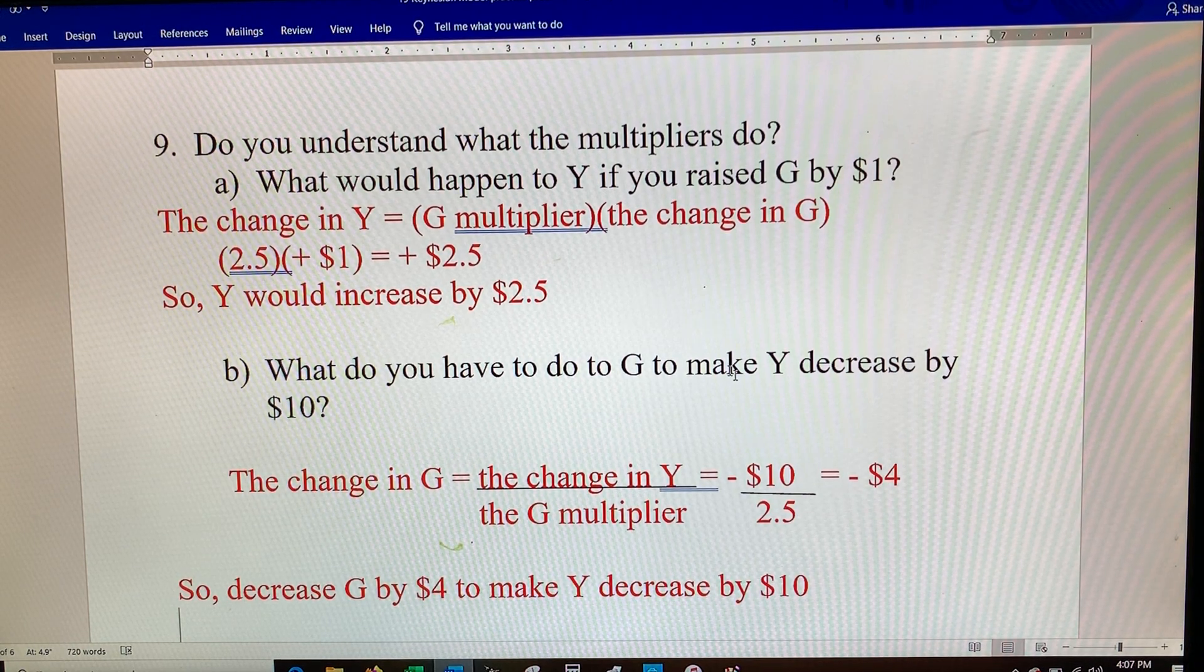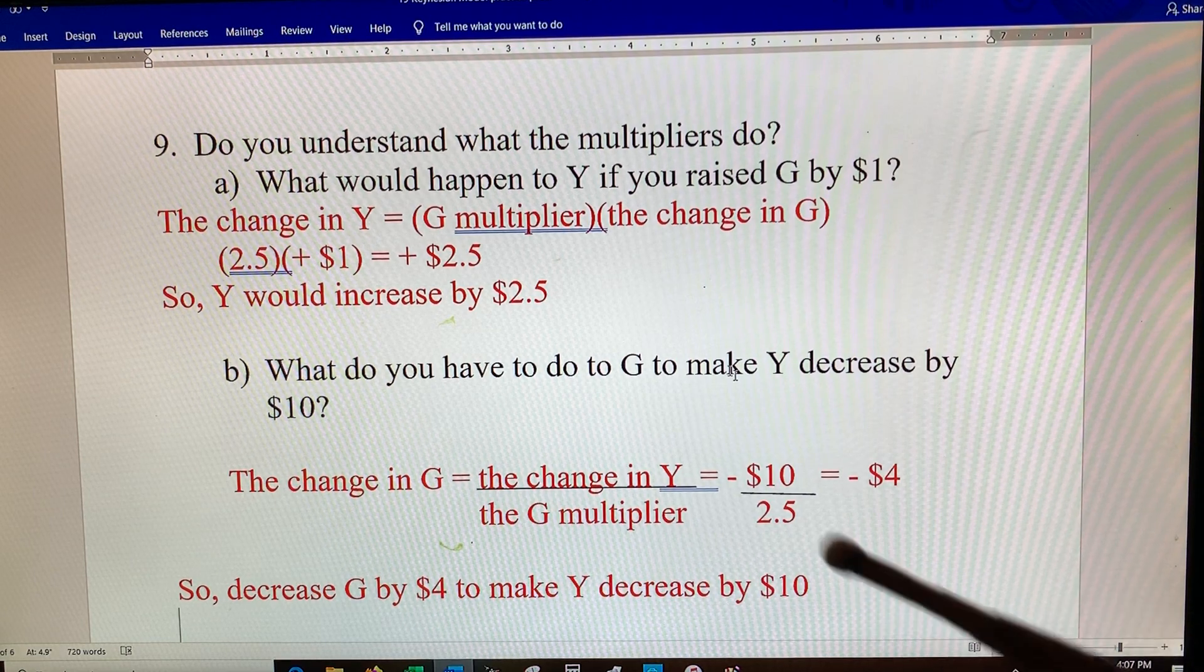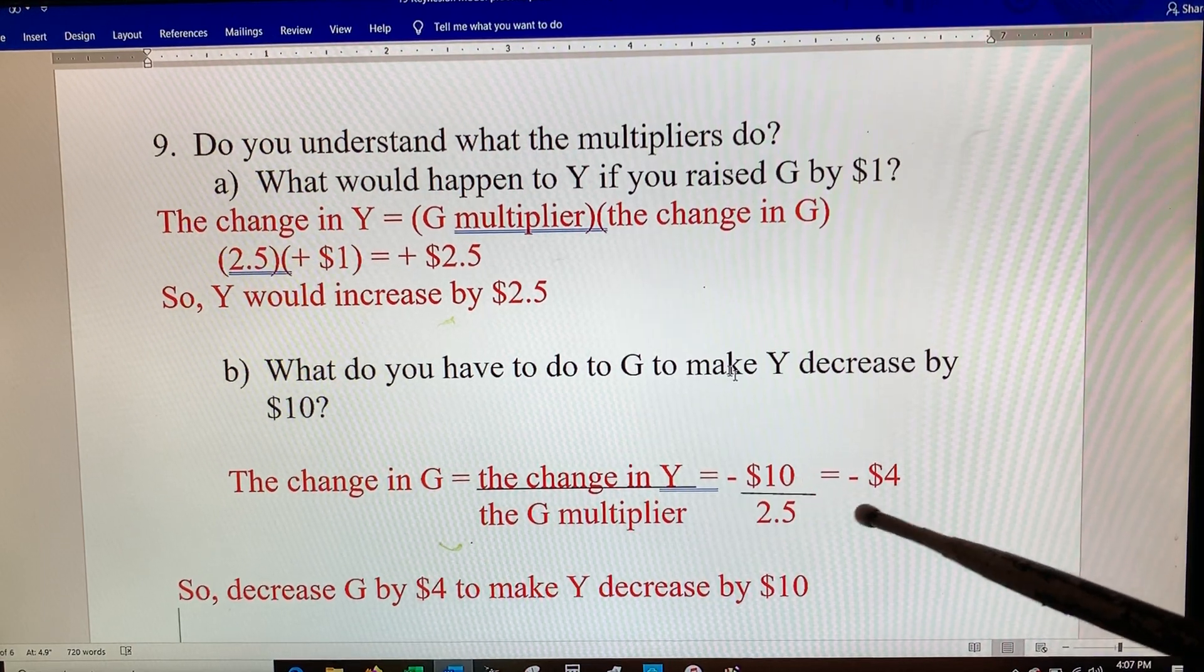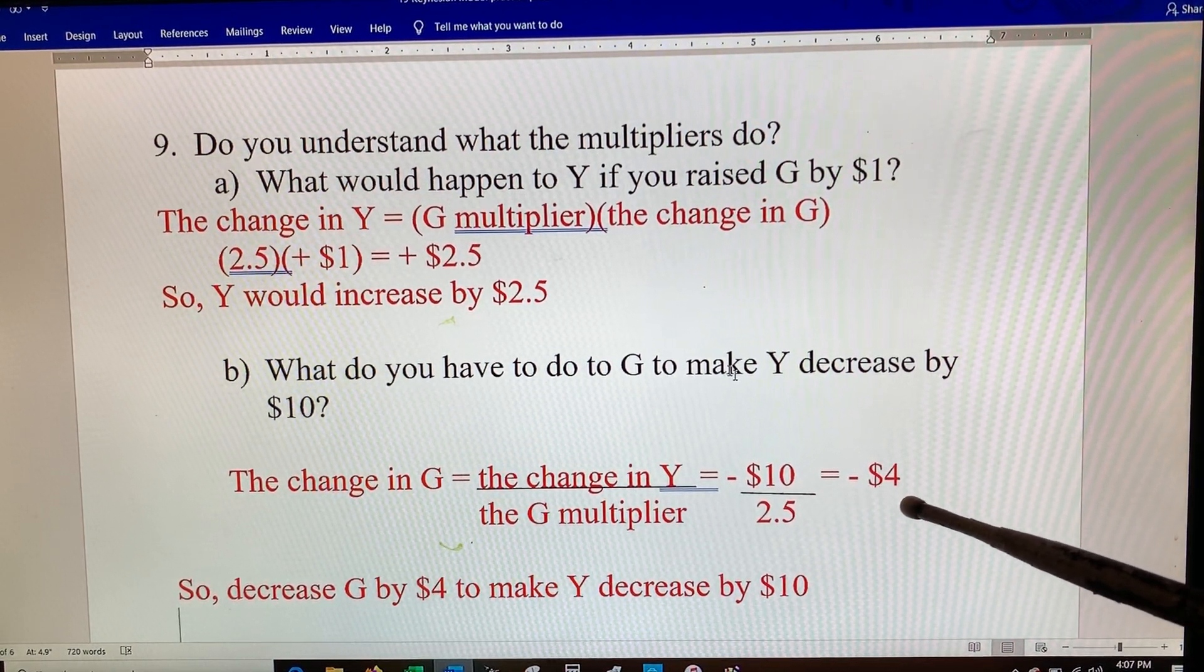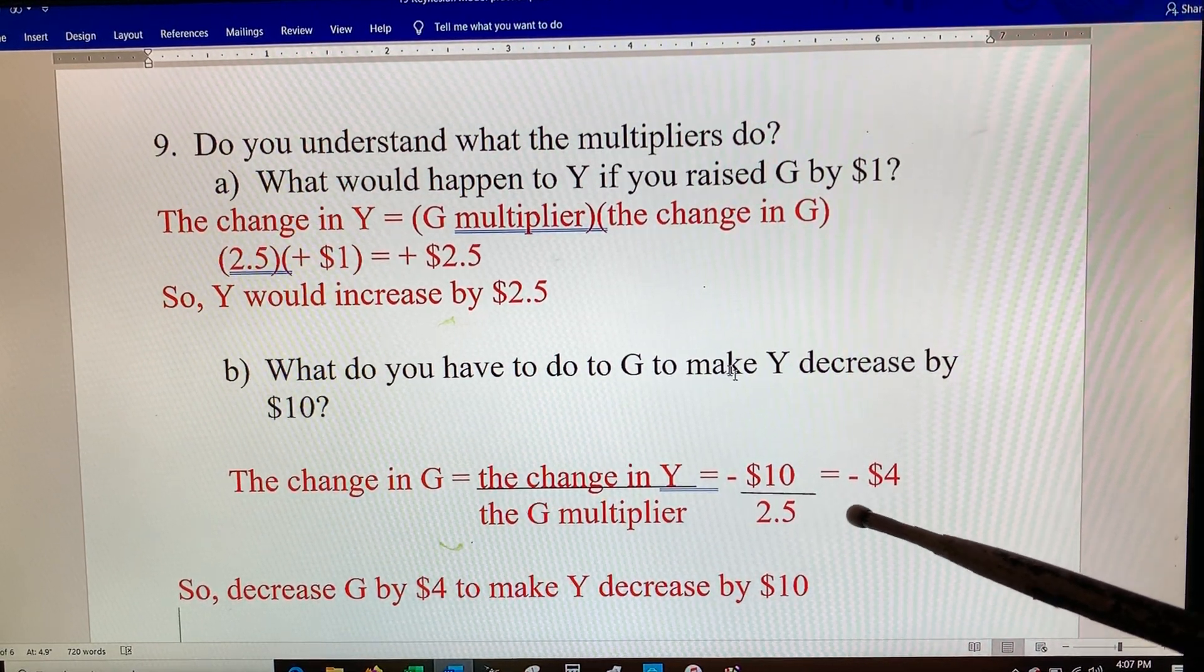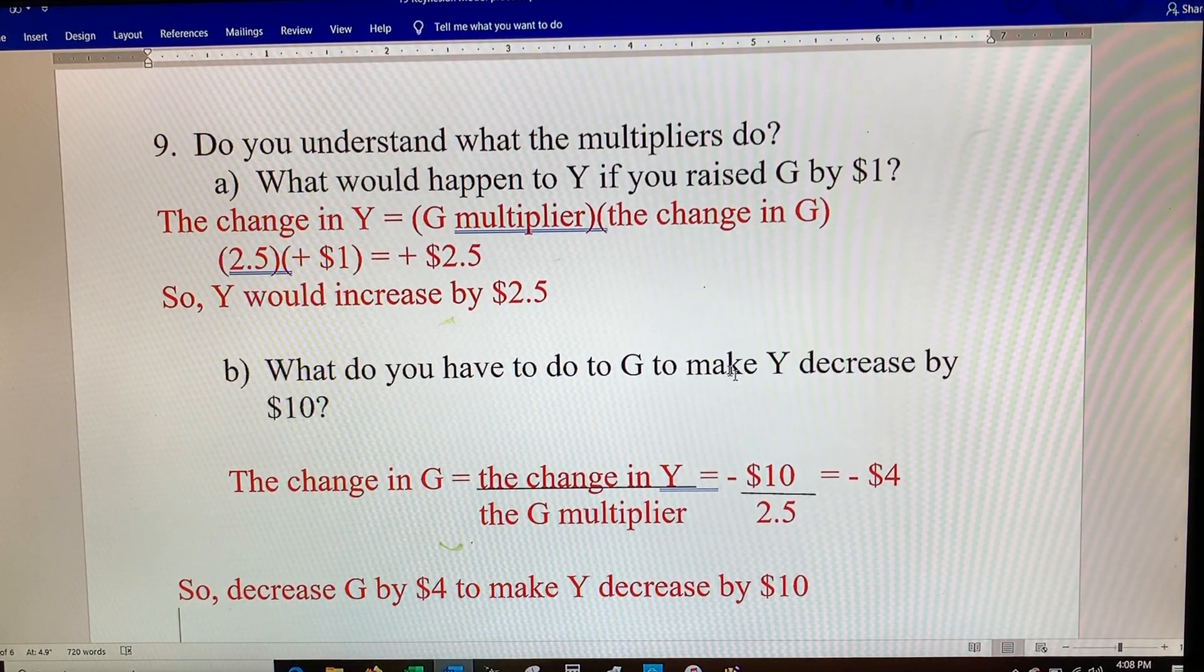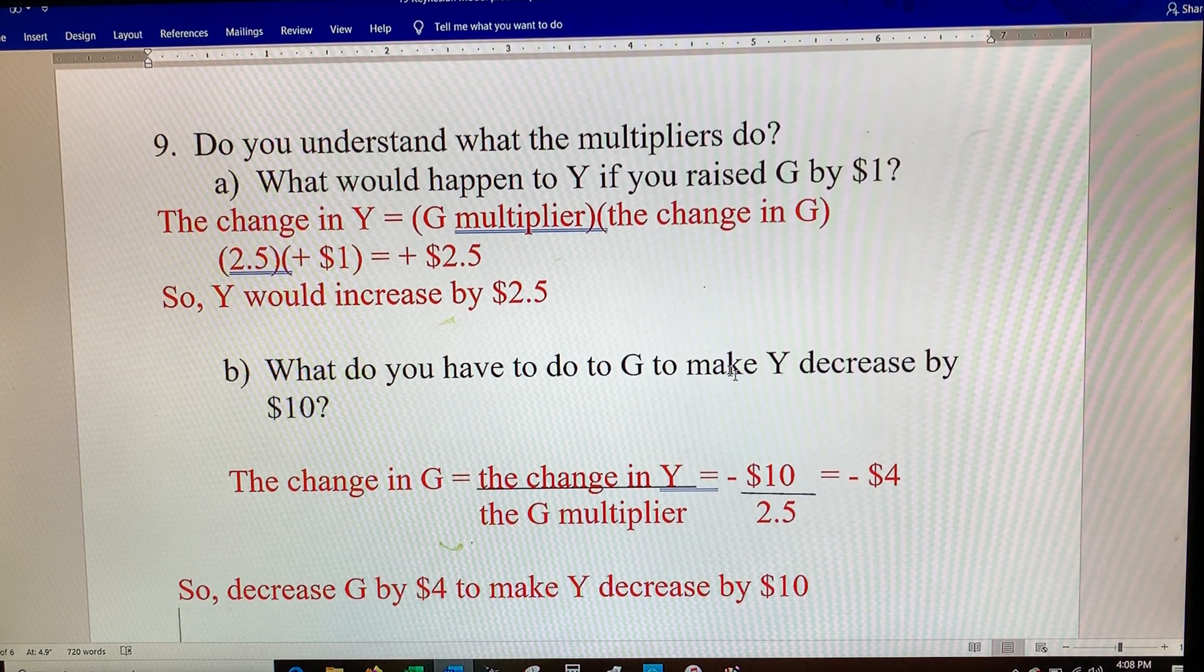What would you have to do to G to make Y drop ten dollars? So your change in Y would be a negative ten dollars. Dividing by the multiplier, you'd have to cut your government spending by four dollars. You'd decrease it, it's a negative four, and that would eventually over a few months cause your GDP to drop ten dollars.